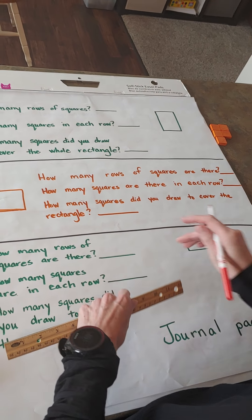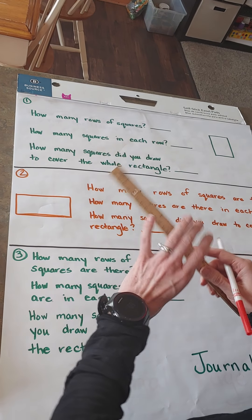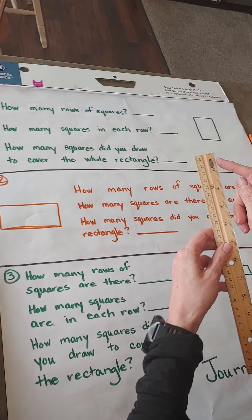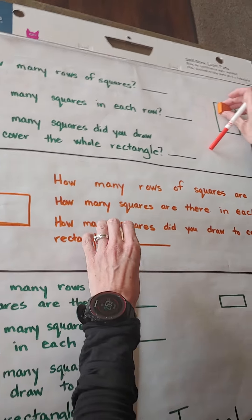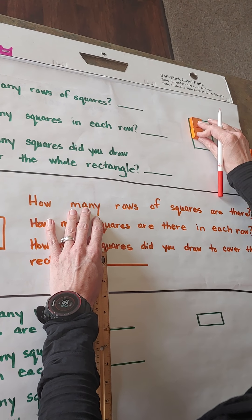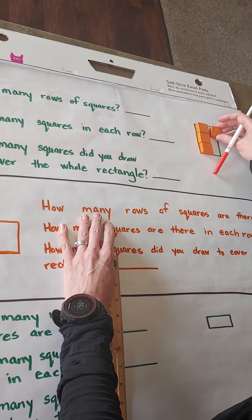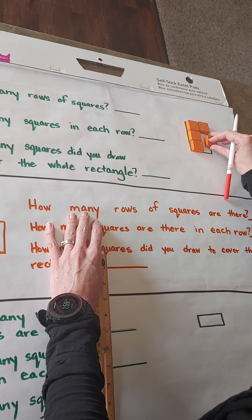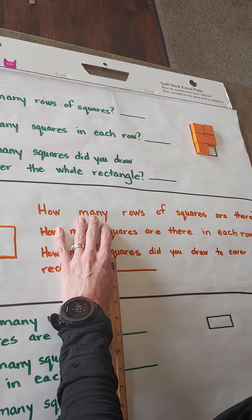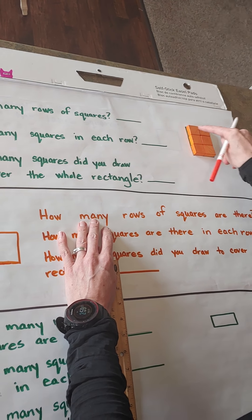So first we're going to talk about how many rows of squares. I'm going to pull out my ruler and remember I'm going to use the one inch — first I'm going to do it with my orange squares. How many rows of squares? So I'm going to partition this rectangle. Looks to me like there might be one, two, three — three rows of squares.